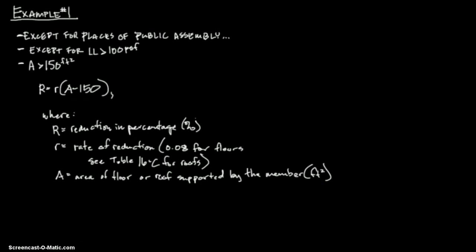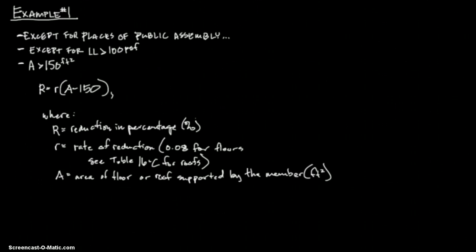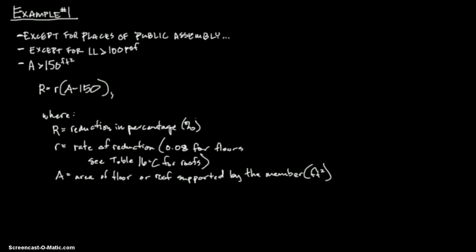What they're asking for is what live load reduction is permitted for a floor member supporting 300 square feet if the dead load is 80 pounds per square foot and the live load is 100 pounds per square foot. I wrote out the steps that you need to do once you're given the values to determine if we can reduce this live load, and once you can, you go ahead and do the math.